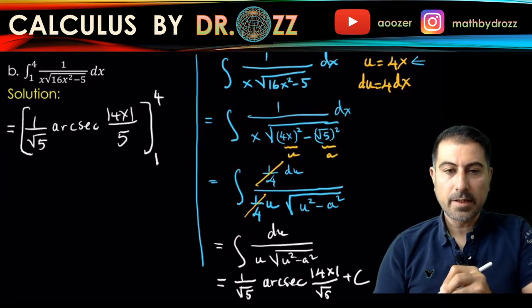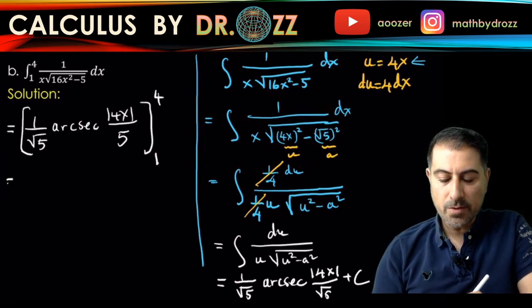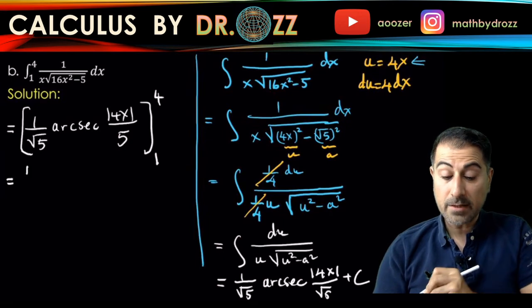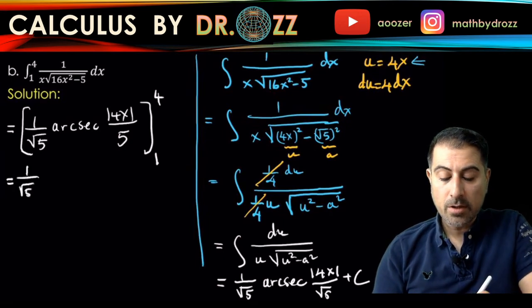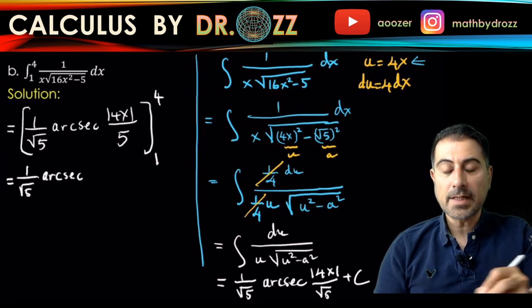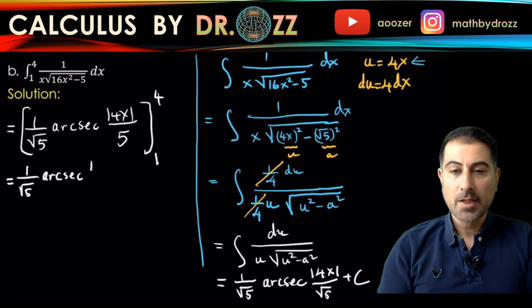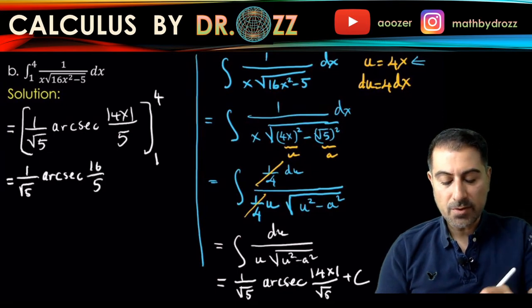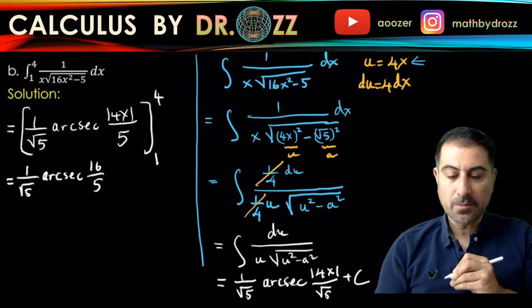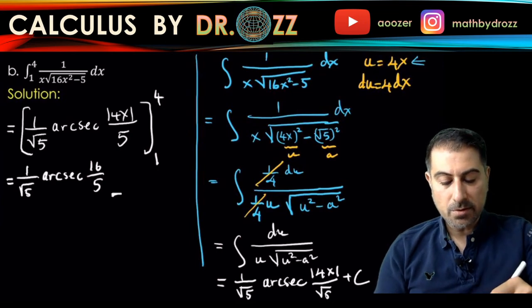And now I'm going to plug in the upper limit. So 1/√5 arc secant—four times four is 16, and 16 is a positive number—so this is 16 over √5 so I don't need to carry forward the absolute value sign. Minus, let me just continue from here.